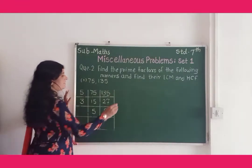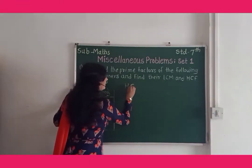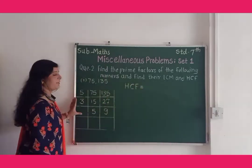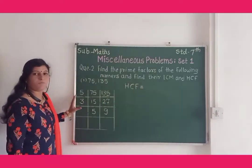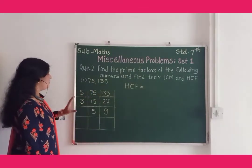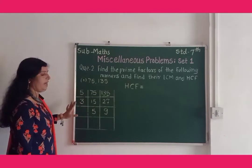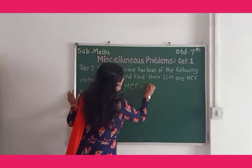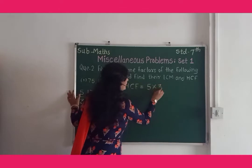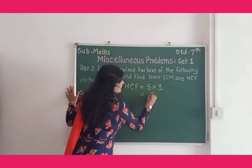Now we find the HCF. HCF means multiplication of common factors in these two numbers. Here the common factors are 5 and 3. So 5 into 3 gives us HCF equal to 15.